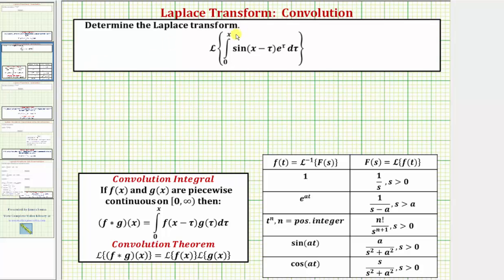We want to determine the Laplace transform of the integral from zero to x of sine of the quantity x minus tau times e raised to the power of tau d tau. If we recognize that this integral is the convolution integral shown here, then we can easily determine the Laplace transform by using the convolution theorem.